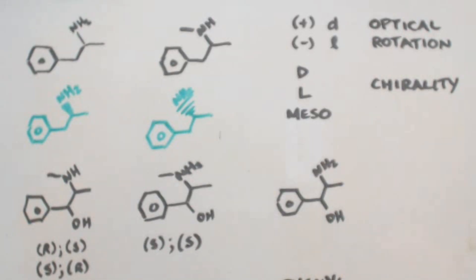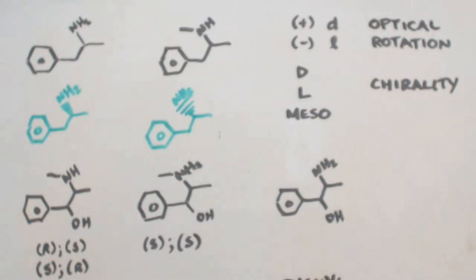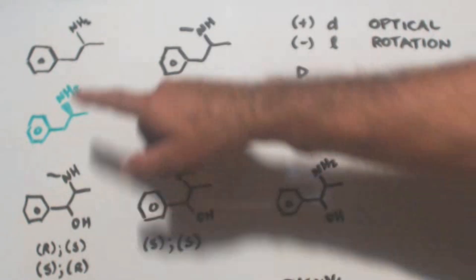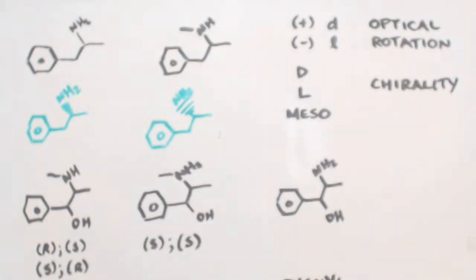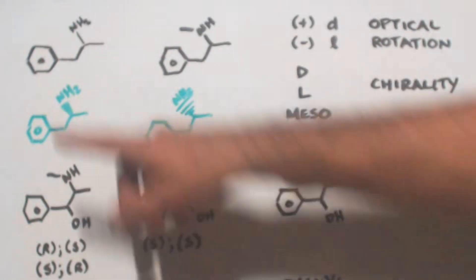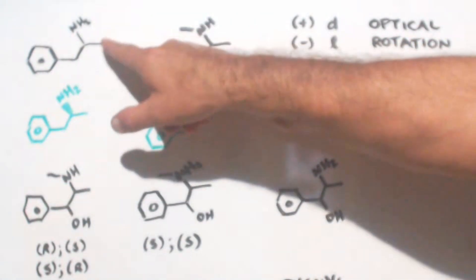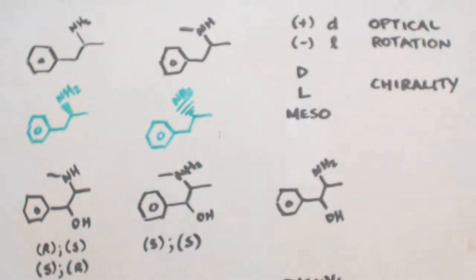This is John Black, Superchemist. I'm here to talk about amphetamines and amphetamine derivatives. I'm trying to bring in some subscribers. Basically, all an amphetamine is is a benzene ring, propane, with an amine.